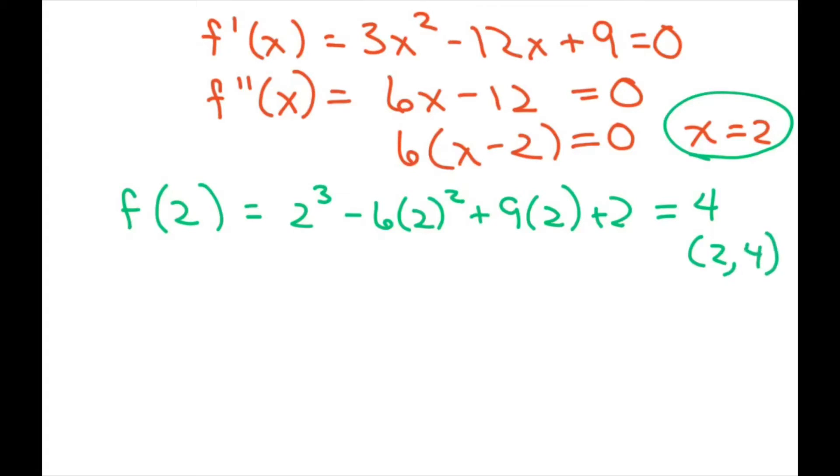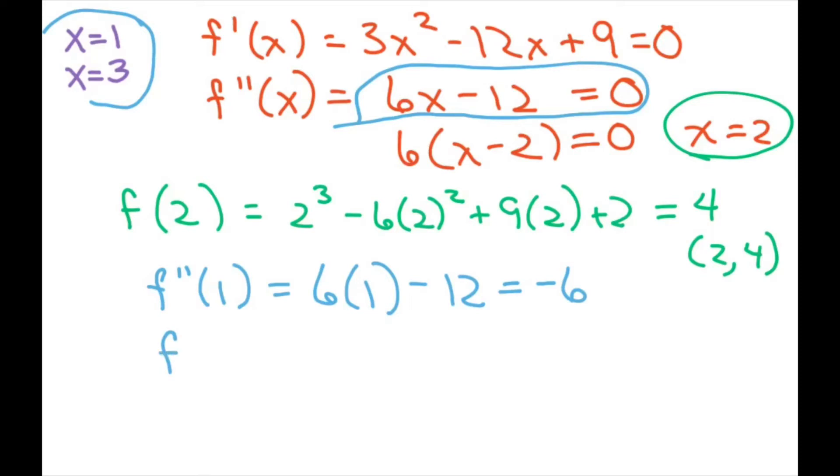So, our inflection point occurs at 2 comma 4. Now, let's test for concavity. Now, recall our first critical points we get with the first derivatives were x equals 1 and x equals 3. So, we're going to plug these points into our second derivative here. We're going to plug that in and see what our value would be. So, f double prime of 1 equals 6 times 1 minus 12. That gives you negative 6. Now, let's plug in the 3. And that would get 6 times 3 minus 12. That gives you positive 6. So, what's this telling you is that since this is negative, that means it's a maximum at 1. And this one is a minimum at 3.